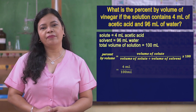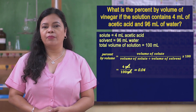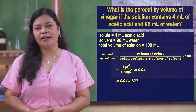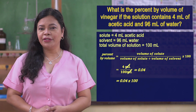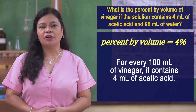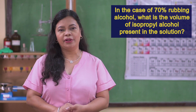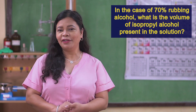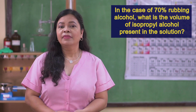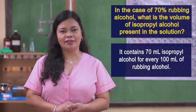Using the formula, we divide 4 ml by 100 ml to get the quotient, which is 0.04. We multiply this value by 100 to get the final answer. This means that the concentration of the vinegar solution is 4%, meaning every 100 ml of vinegar contains 4 ml of acetic acid. In the case of 70% rubbing alcohol, it contains 70 ml of isopropyl alcohol for every 100 ml of rubbing alcohol. This mixture is effectively used as a disinfectant to prevent the spread of bacteria and viruses.